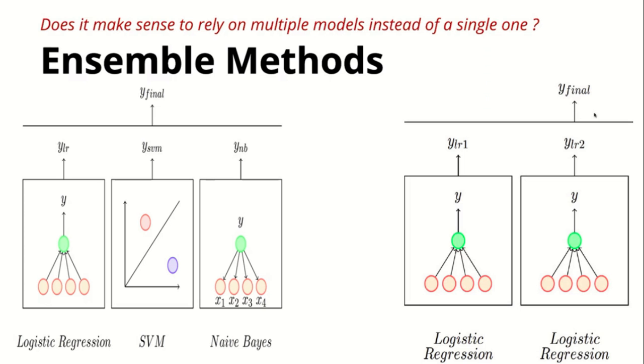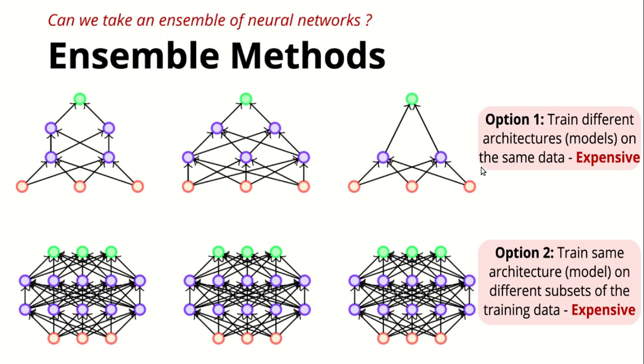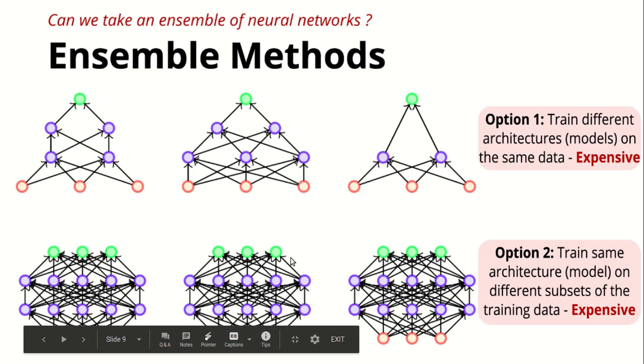Can we apply this same method on deep learning or neural networks? Option one is where we have different architectures but we train on the same data. As we know, training a single neural network architecture is already expensive, and training three or more networks would be really hard. The other option is same networks but training on different subsets of data or different features, but that would be expensive also because our network is already dense.